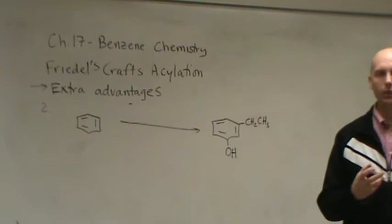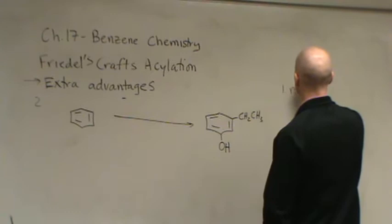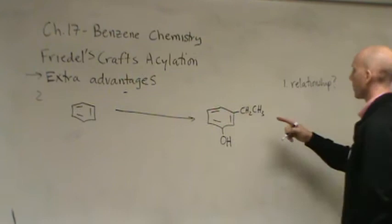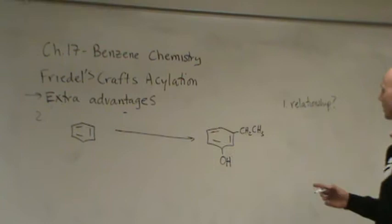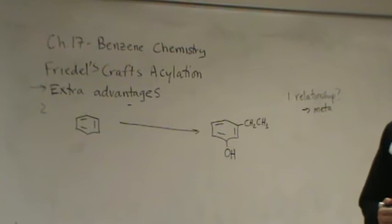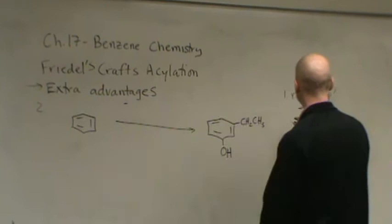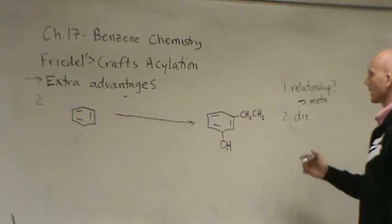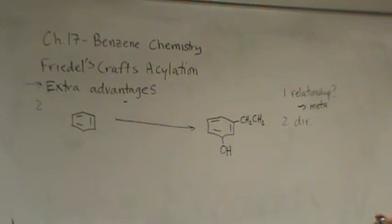This is really an introduction to synthesis or what we call synthetic strategy in organic chemistry. And in order to do this, we always ask two questions. First question is, what is the relationship between the two groups? The relationship is that they are meta to each other. So, that's the first question I always ask. Simple question, but it gives you the order of how to do this. The second question you ask is, which group do you put on first? That's based on the directing ability.